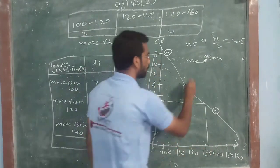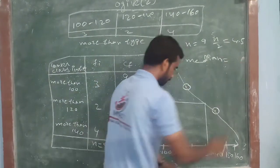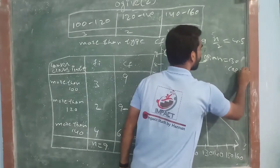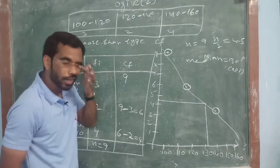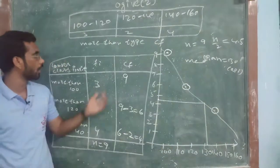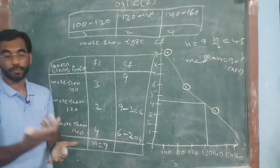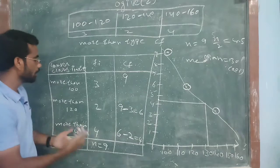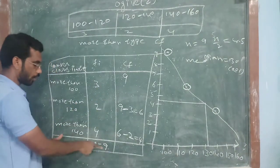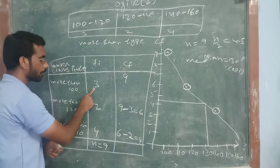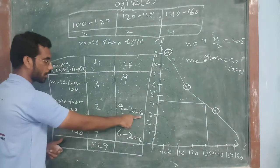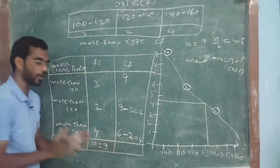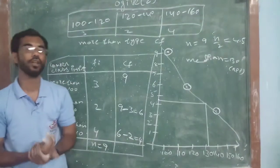Where it is getting? It will be median is equals to 130 approximately. Already, we have seen this how to make in the previous problem. More than type cumulative frequency in the previous problem we have seen. In this one, total you have to take. What the total we are getting? 9 minus 3, then 6 minus 2. This 2 should be equal. If it is getting equal, then it is possible.